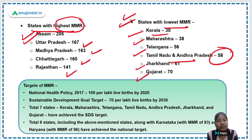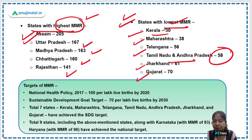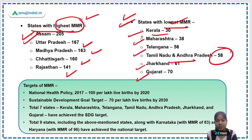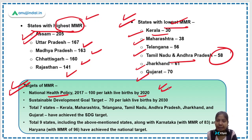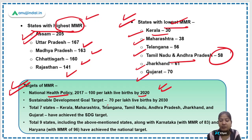These are the states with highest and lowest MMRs from the special bulletin. The most important point here is the targets of MMR. According to the National Health Policy of 2017, the target is 100 per lakh live births by 2020. The Sustainable Development Goal target is 70 per lakh live births by 2030.